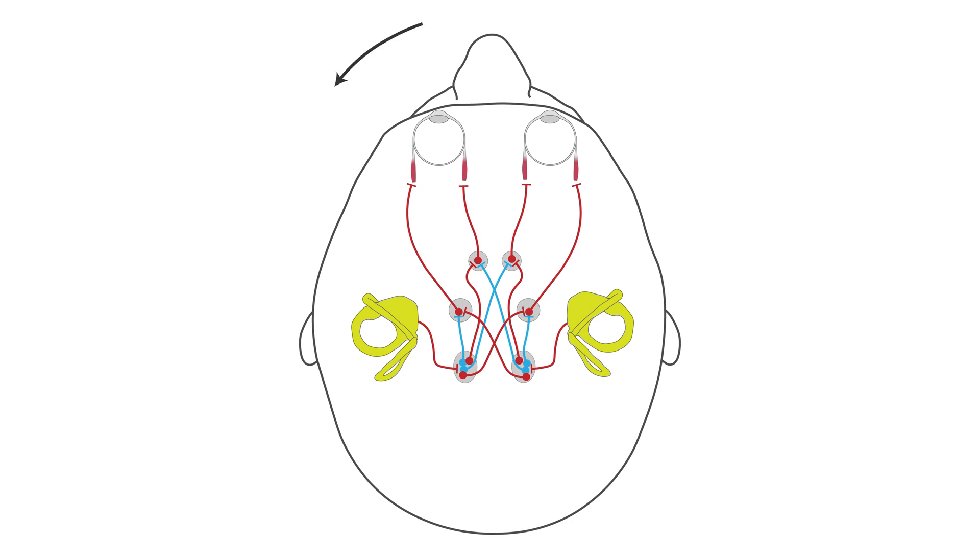When your head turns left, the fluid in the vestibular apparatus, in both of them, sloshes the opposite way. And the frequency at which their neurons fire changes. Specifically, the left one will be sending more electric spikes, and the right one, less.